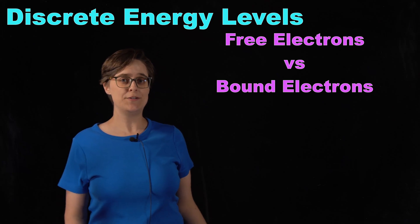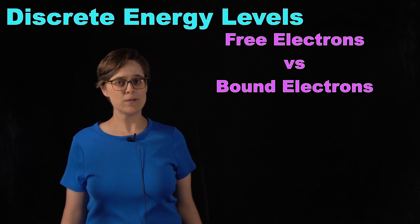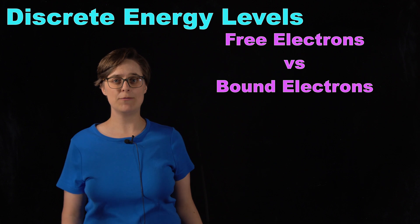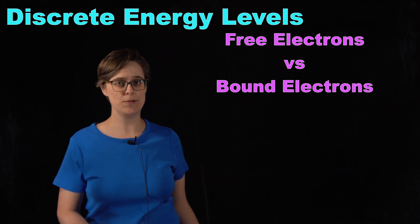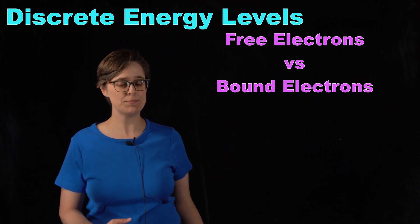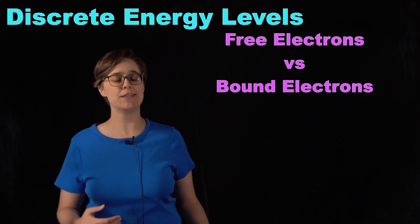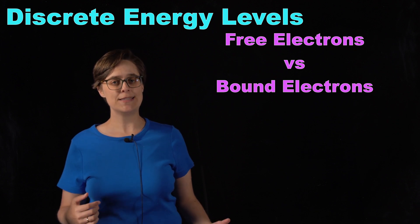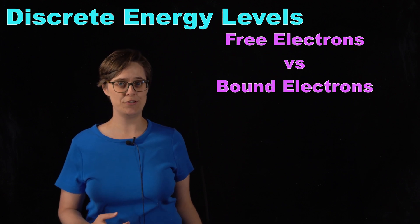Free electrons that are not part of an atom can have all sorts of different energy levels. However, when an electron is bound to a nucleus and it's part of an atom, there are certain energy levels that are just not allowed. This is called having discrete energy levels.